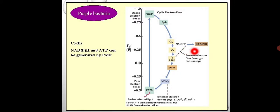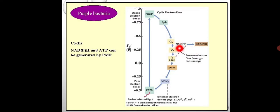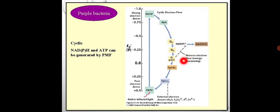In this case, the electron goes in reverse. We must store energy in the form of NADH, so electrons get reversed back — hence this is known as reverse electron flow. It is important to reduce NAD+ to NADH or NADP+ to NADPH.